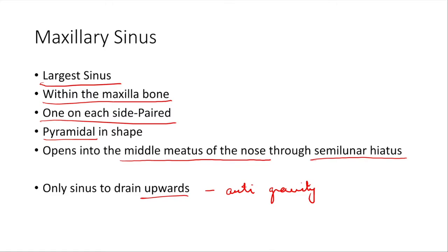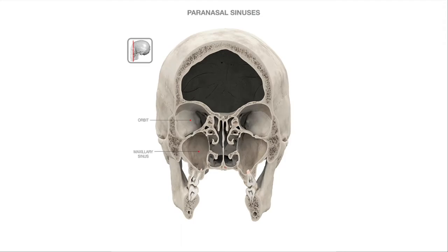Looking at the relations of the maxillary sinus: it is pyramidal in shape. The medial wall is formed by the nasal cavity. The superior wall — the roof — is formed by the orbit, with the infra-orbital nerve running there. The floor is formed by the alveolus of the maxilla. The ostium is on top, which is why it drains anti-gravity — mucus circulates throughout the sinus and then drains upward.